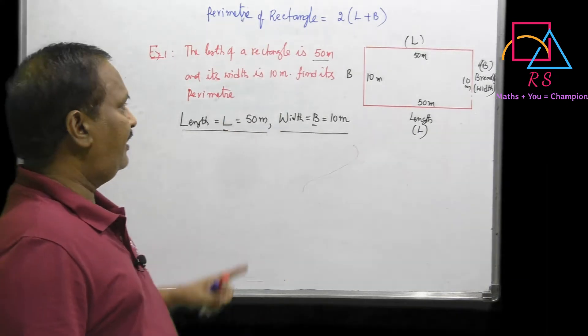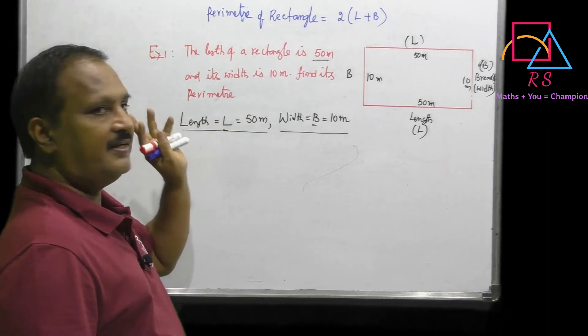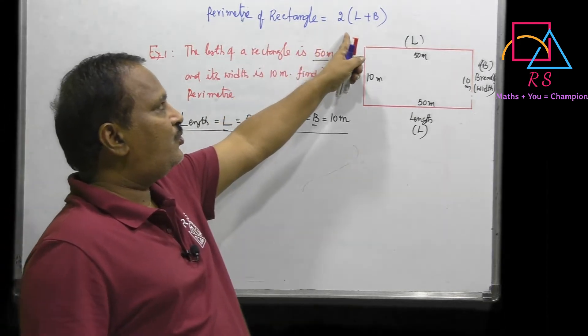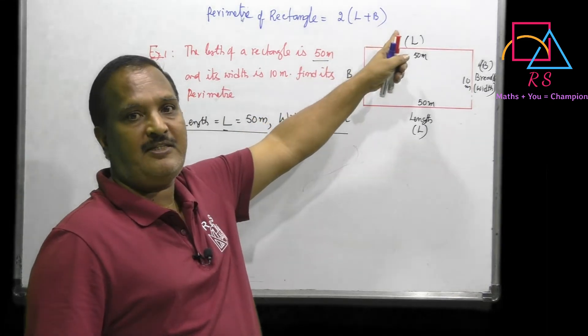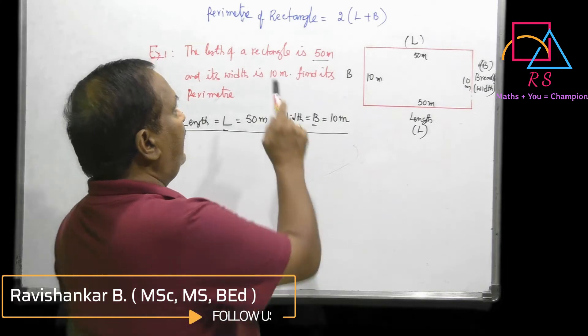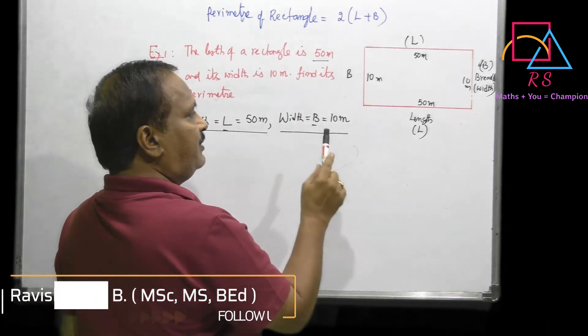The perimeter formula is 2 into length plus breadth, or 2(L+B). Let me remind you what perimeter means.